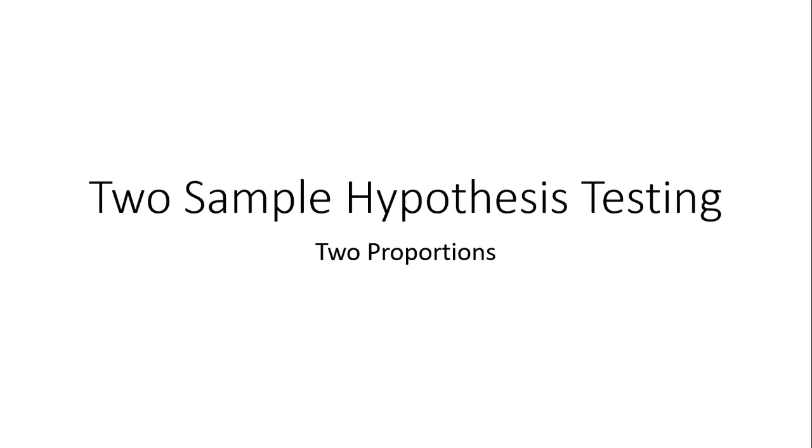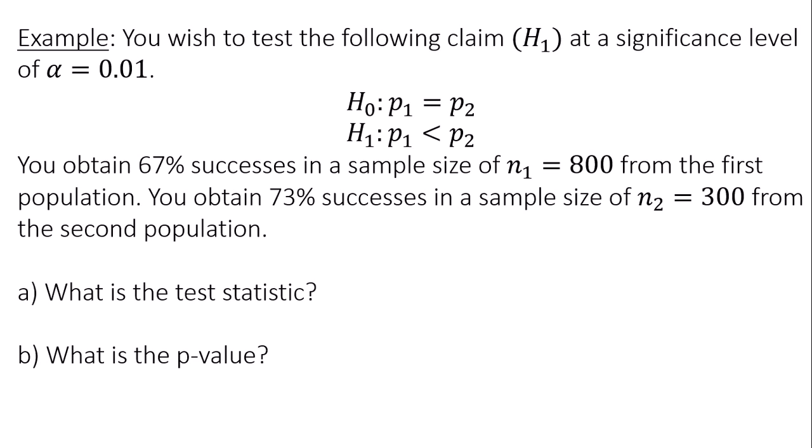This is a video on two-sample hypothesis testing comparing two proportions. You wish to test the following claim, the alternative hypothesis, at a significance level of alpha equals 0.01.